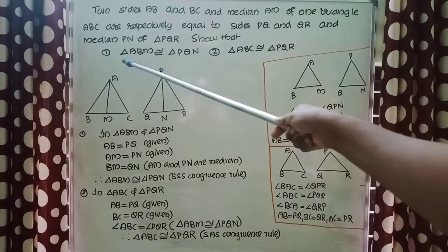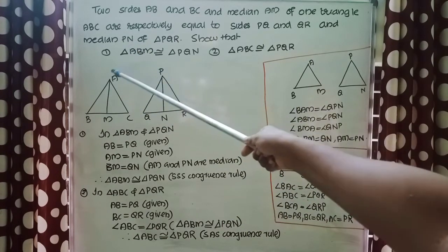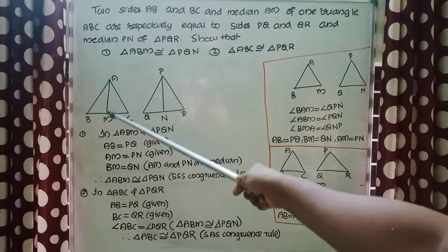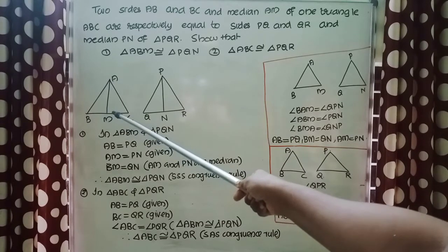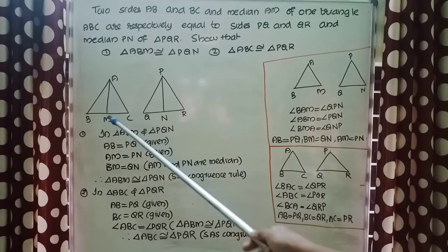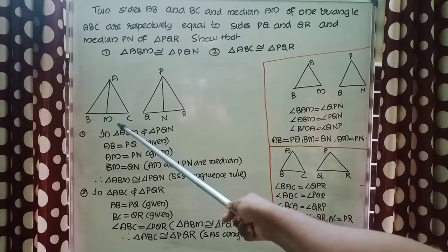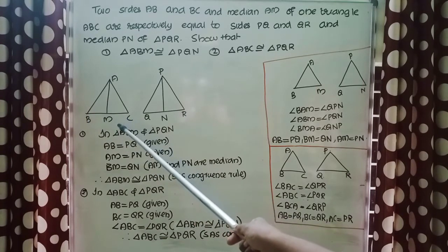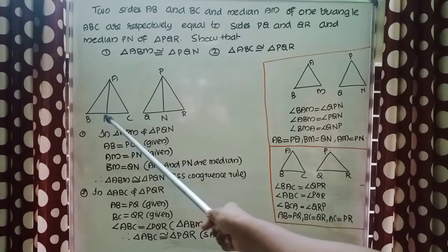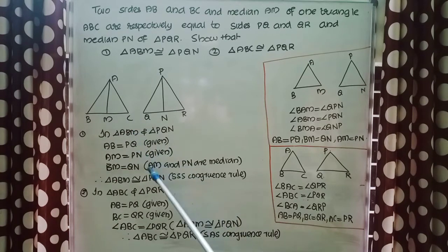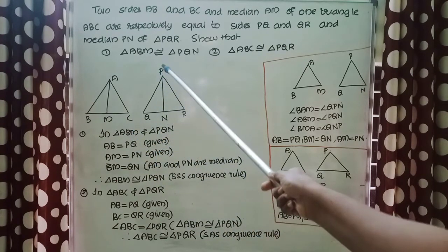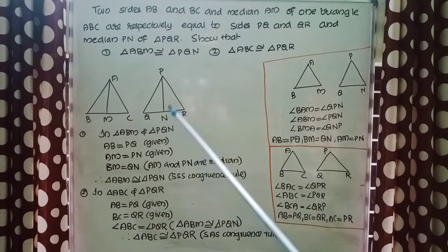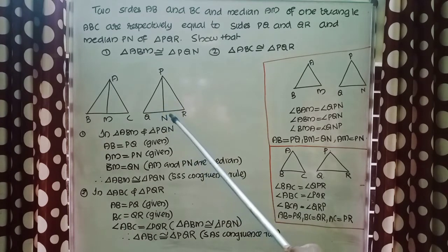A median is the line segment drawn from one vertex to the midpoint of the opposite side. Here, M is the midpoint of side BC, which means BM equals MC. Similarly, PN is the median of triangle PQR, so QN equals NR.